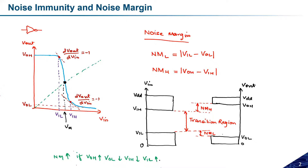There is an important constraint to explain. VOH has a maximum limit of VDD — you cannot go beyond VDD in any circuit. Similarly, VOL has a minimum limit of zero. You cannot decrease VOL below zero or increase VOH beyond VDD, since these are the two voltage levels provided. So the maximum VOH is VDD and the minimum VOL is zero.